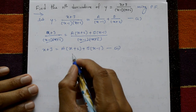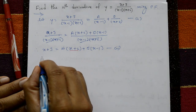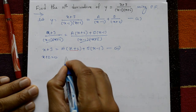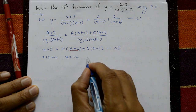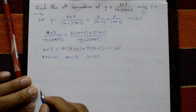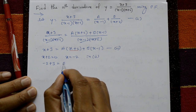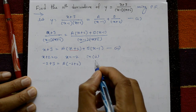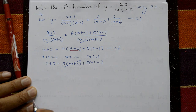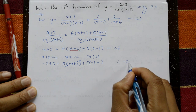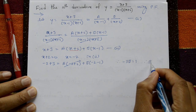Find A and B. Take x+2 = 0, so x = -2. Put x = -2 in equation number 2: -2+3 = A(-2+2) + B(-2-1). The A term is 0, so therefore -3B = 1.